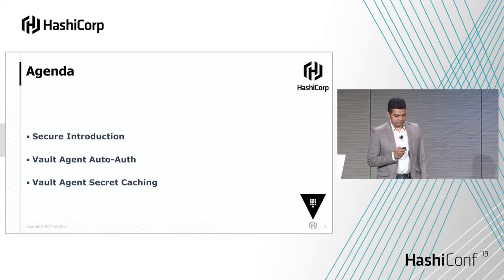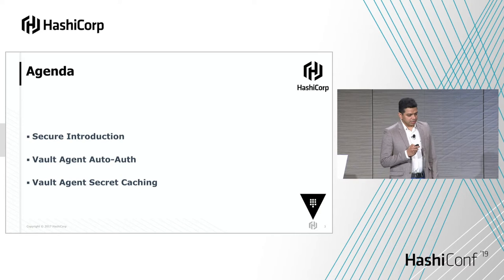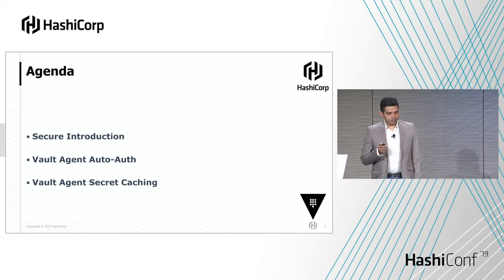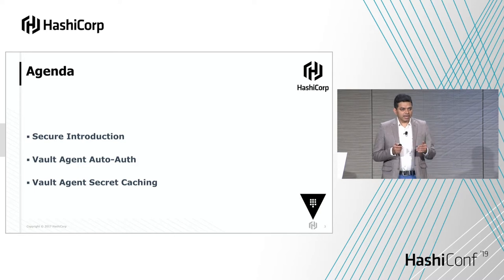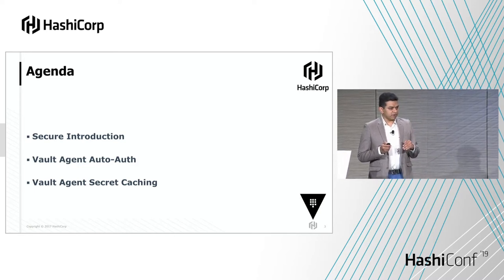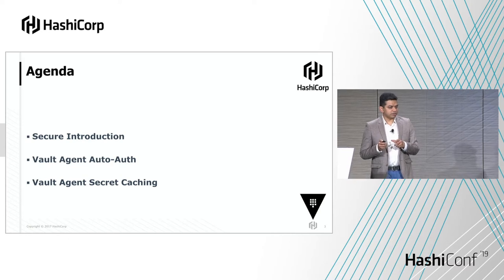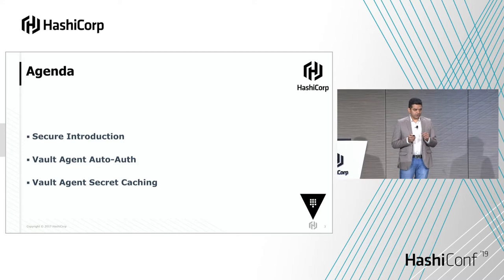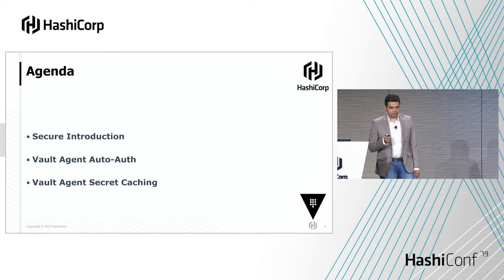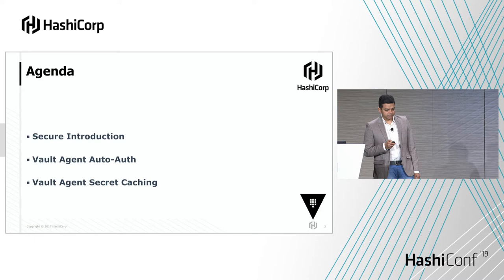We'll be talking about basically these items. The first one is secure introduction, then we'll move on to talk about what a Vault Agent is, then we'll see the auto-auth feature of Vault Agent and what problem it solves, and then we'll define the problem of Vault getting potentially loaded due to misconfigured clients, and then we'll talk about the secret caching feature of Vault Agent that solves that problem. Secure introduction defines the problem space and auto-auth tries to solve it.